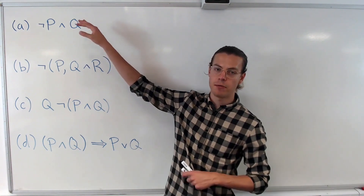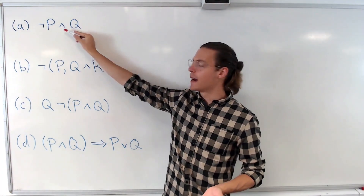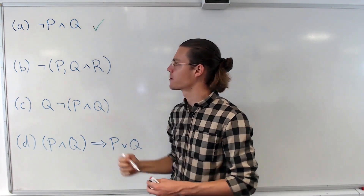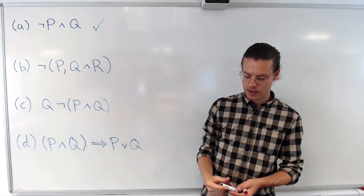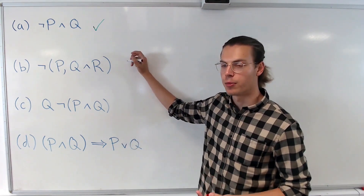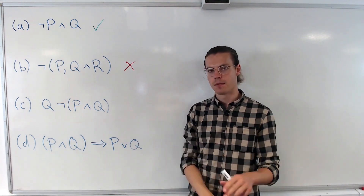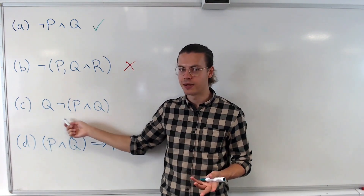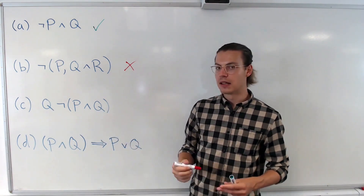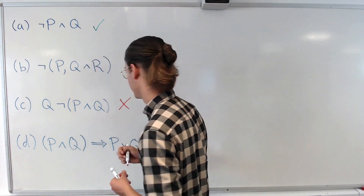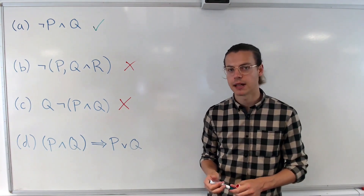In this exercise we have to determine which of these are well-formed formulae and which are not. First, NOT P AND Q — that's a well-formed formula. B is NOT P, Q AND R — commas are not used in propositional logic, so this is not a well-formed formula. C is Q NOT P AND Q — the NOT operator does not link two statements, it's only put at the front of a statement, so something is missing here, perhaps an AND or an OR. This is not a well-formed formula. And finally, P AND Q implies P OR Q — nothing wrong with that. That's a well-formed formula.